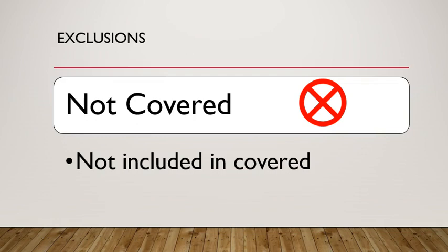Provisions in the policy take coverages away from certain claims in the exclusions section. Perils can be excluded from a policy — excluded means it's not included, it's not covered. For example, property insurance policies do not cover war; war is an exclusion in many policies. This means that if the property is damaged due to the peril of fire brought on by a war, there's no coverage. Even though fire is a covered peril, war is an exclusion and the exclusion eliminates that coverage.